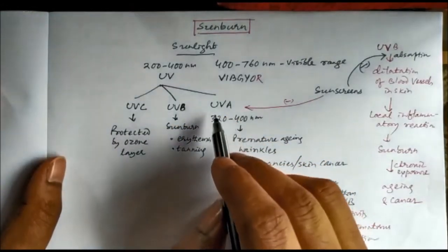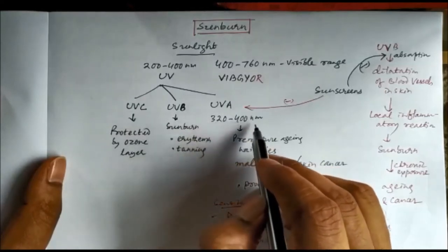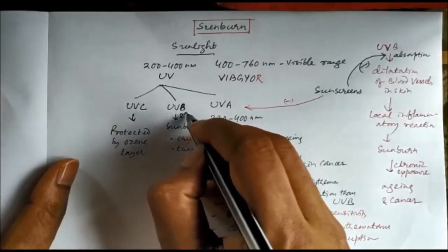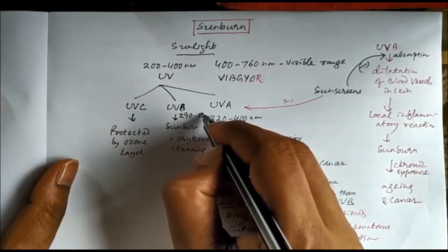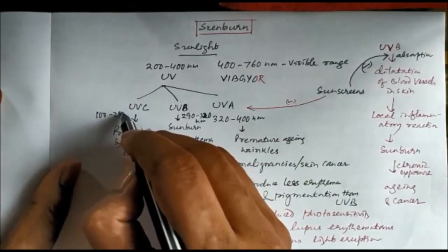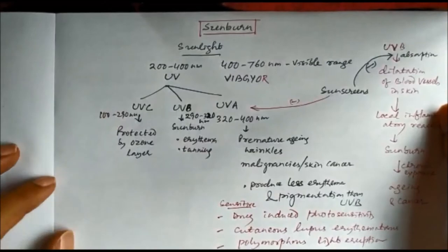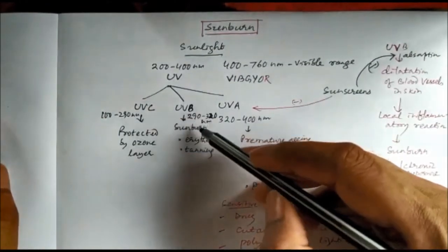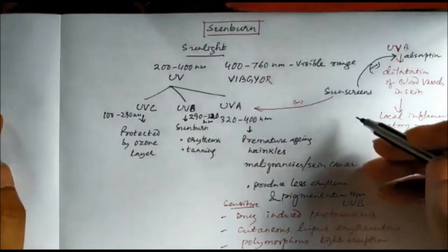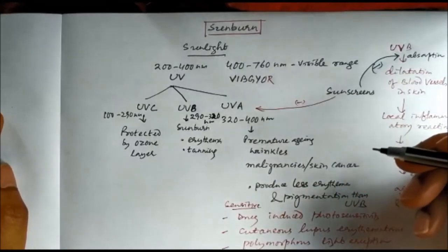UV rays can be divided into UVA, UVB, and UVC. UVA is the highest, ranging from 320 to 400 nanometer. UVB is 290 to 320 nanometer. Below that, from 100 to 290 nanometer, is UVC — the ozone layer protects us from UVC. UVB causes sunburn characterized by erythema and tanning due to pigmentation, while UVA causes premature aging, wrinkles, and skin cancer.